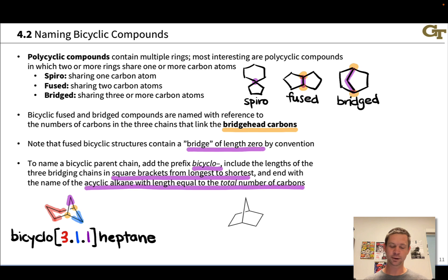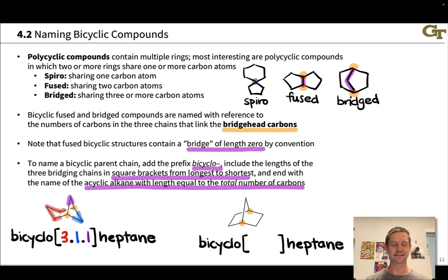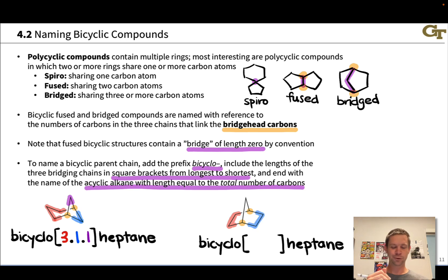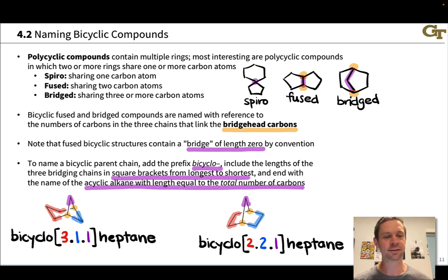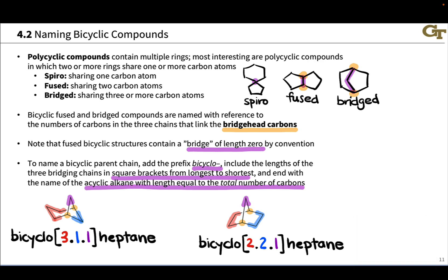In the second example, we again have a heptane. The bridgehead carbons are the relatively highly substituted carbons on either end of the linkers. Counting bridges: a two-carbon bridge highlighted in red, another two-carbon bridge highlighted in blue, and a one-carbon bridge at the top. So this is bicyclo[2.2.1]heptane. These two structures are actually constitutional isomers — both C7H12, but connected in slightly different ways with different ring sizes.